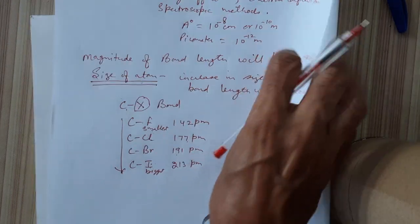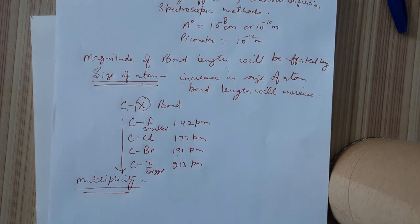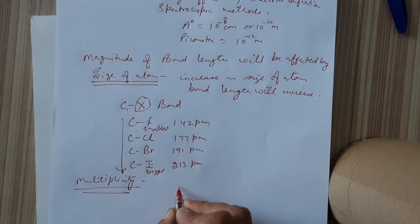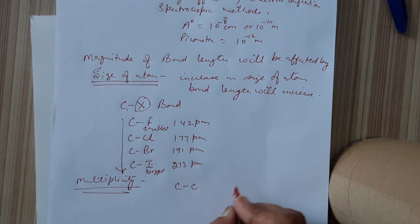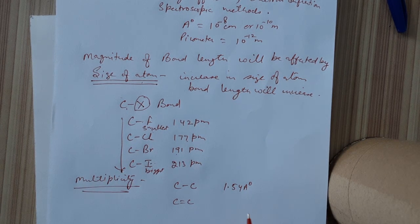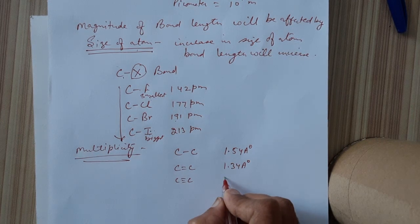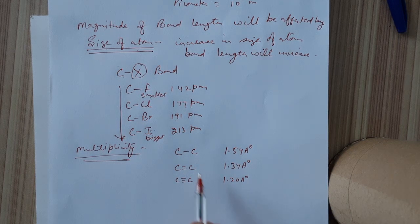The second factor is multiplicity — that is, single bond, double bond, or triple bond. With increase in multiplicity, bond length decreases. For example, the C–C single bond has a bond length of 1.54 angstroms. The C=C double bond, as in alkenes, is 1.34 angstroms. And the C≡C triple bond is 1.20 angstroms. So with increase in multiplicity, bond length decreases.